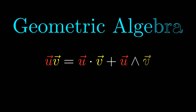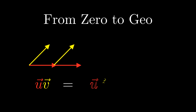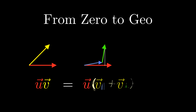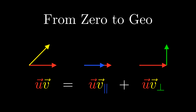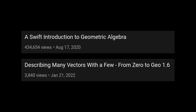A little while ago, I made the video "A Swift Introduction to Geometric Algebra." Since making it, I've realized that there were a few things that were either misleading or unclear in it, so I decided to create this addendum that should hopefully clear these things up. I have been working on a series called "From Zero to Geo," but it seems that many more people have been watching my Swift Introduction than From Zero to Geo, so I realized it might be a good idea to make a separate video.